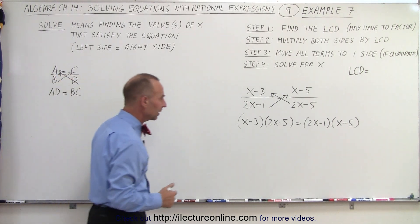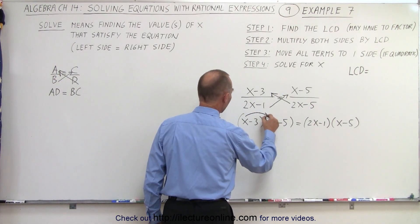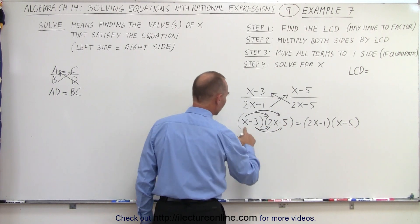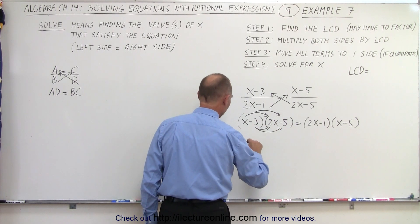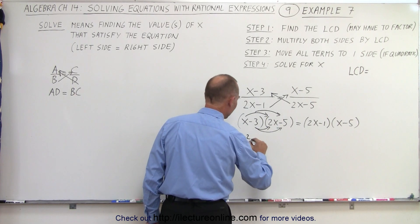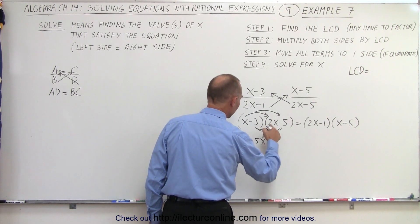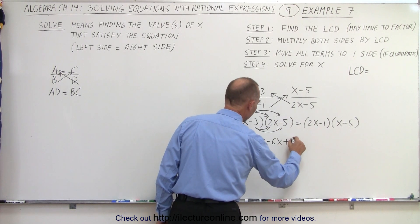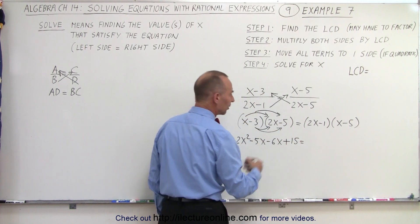Now let's multiply things together. So this becomes x times 2x, which is 2x squared, x times negative 5, minus 3 times 2x, and minus 3 times negative 5 becomes plus 15. On the right side,